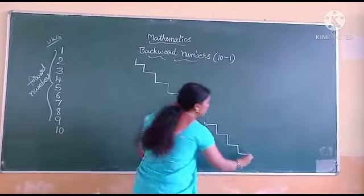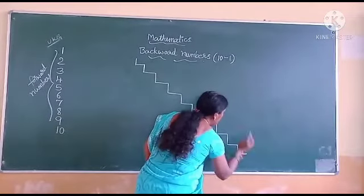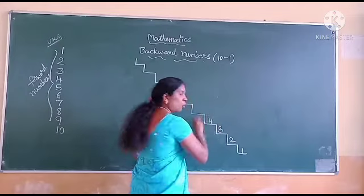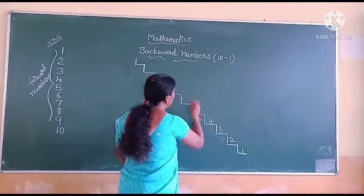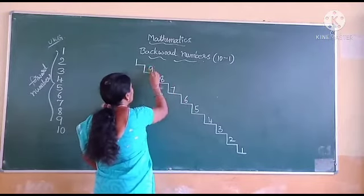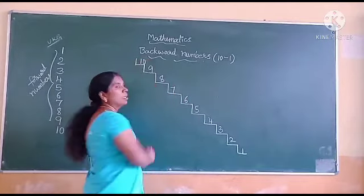Okay, start. 1, 2, 3, 4, 5, 6, 7, 8, 9, 10. I have already told that these are the numbers from 1 to 10. This way we call forward numbers — forward counting.